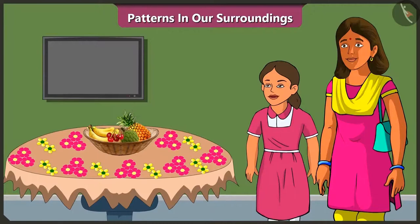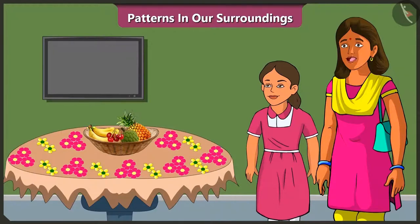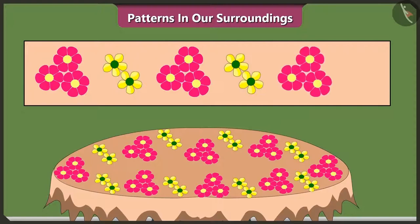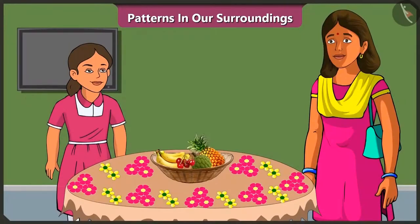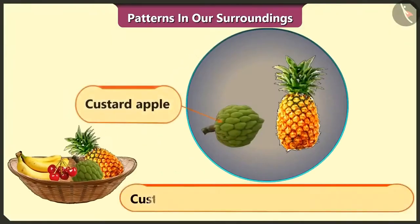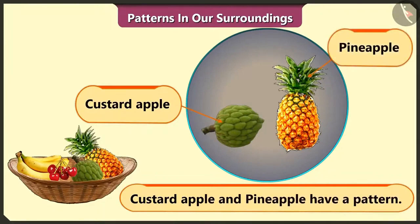Vinny notices the tablecloth also has a pattern: three flowers, then two flowers, then again three flowers, two flowers — repeated to create the pattern. Mummy asks which fruits on the table have a pattern. Vinny identifies custard apple and pineapple.